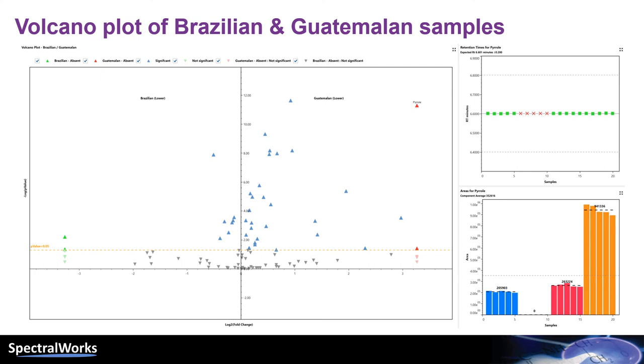The Volcano plot allows us to quickly see the significance and variation in the components between two particular groups of samples. Every component above the orange p-value line is considered significant. The green components to the left are absent in the Brazilian samples and the red ones to the right are absent in the Guatemalan samples.